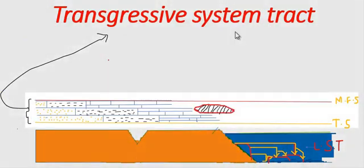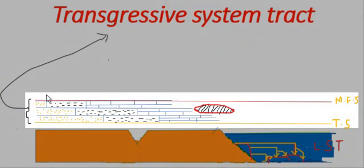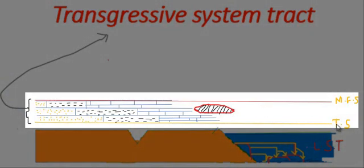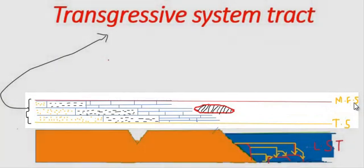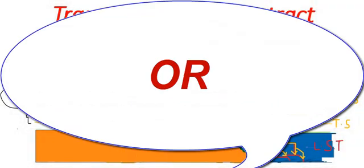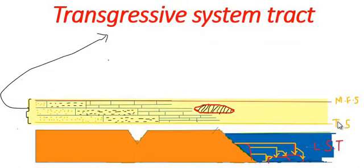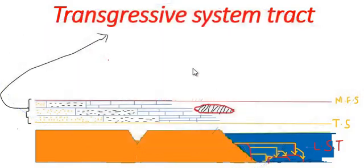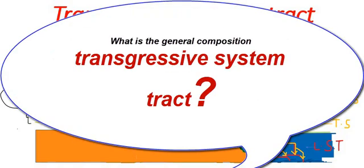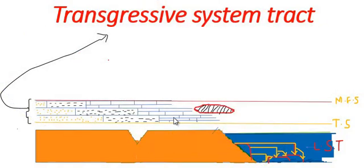Transgressive systems tract is a genetically related strata bounded below by the transgressive surface and above by the maximum flooding surface. It lies in between the transgressive surface and maximum flooding surface. The transgressive systems tract formed during retrogradation, and it consists of topset and condensed sections.